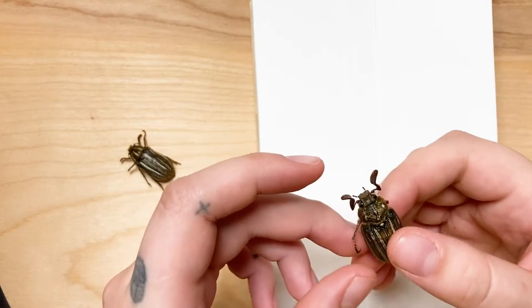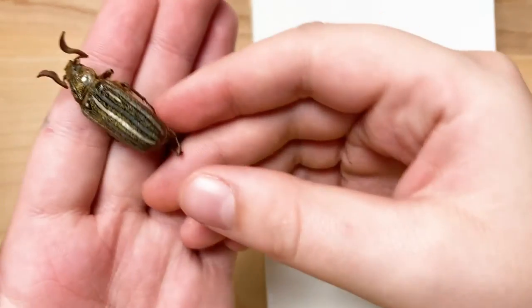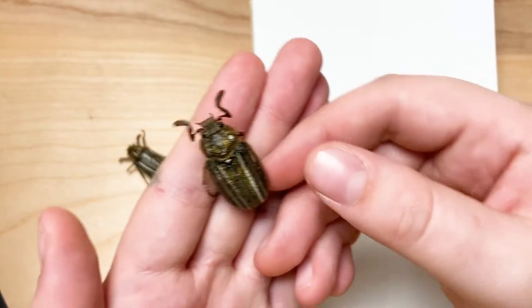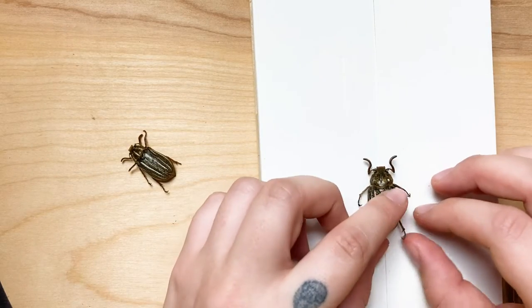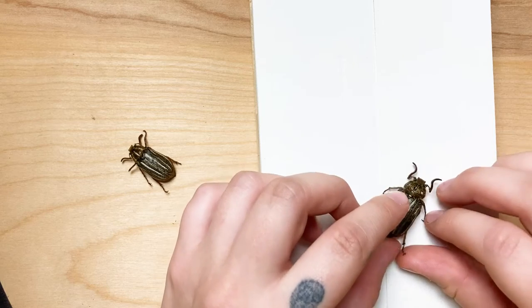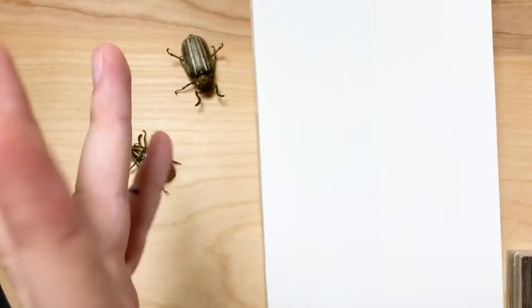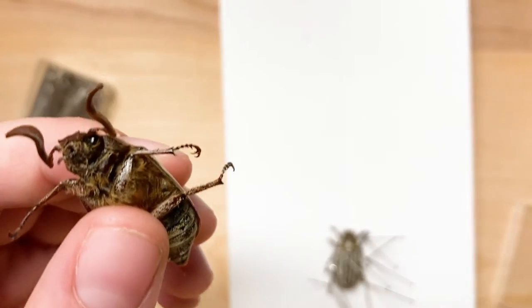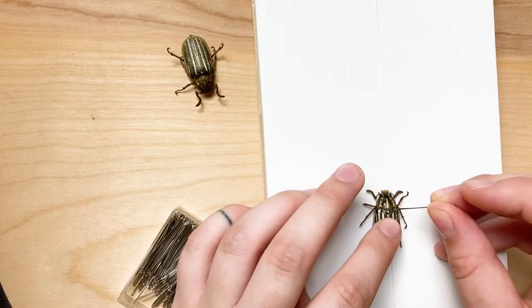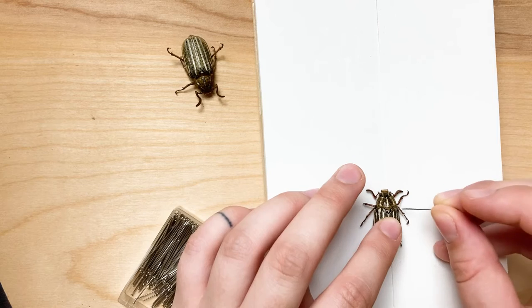Hey there, welcome back. We have these June bugs and they're nicely hydrated. I'm just going to check how mobile their limbs are. They look pretty good, and oh, the little claws you can see on the end of their limbs always get stuck to my fingers. I'm going to start by placing pins on either side of each limb.